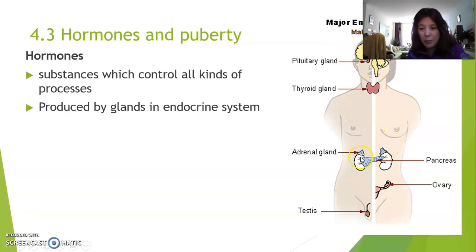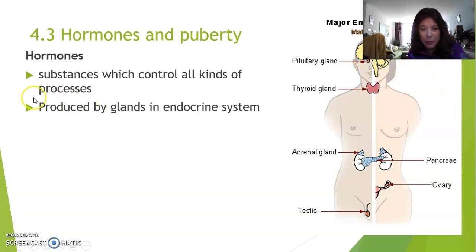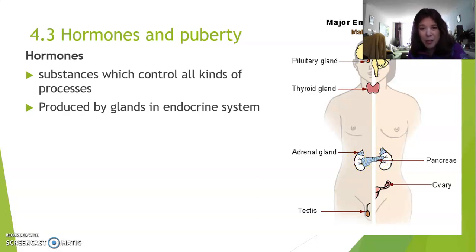Part of the endocrine system is in your brain, part is in the center of your body, and part is in your sex organs. All of these different organs work together in the endocrine system. In the brain we have a very tiny little gland called the pituitary gland. There's also the thyroid gland in your throat — in Dutch called the schildklier — and glands on top of your kidneys called the adrenal glands. The pancreas also makes a special hormone called insulin.